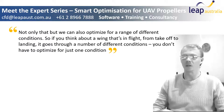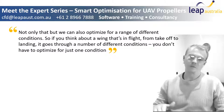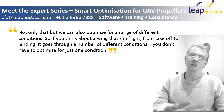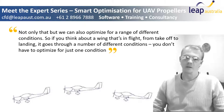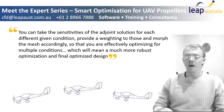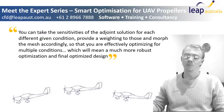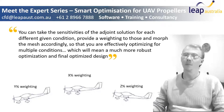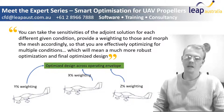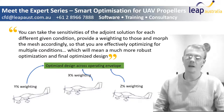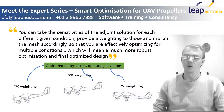Not only that, but we can also optimize for a range of different conditions. If you think about a wing in flight from takeoff to landing, it goes through a number of different conditions. You don't have to optimize for just one — you can take the sensitivities of the adjoint solution for each condition, provide a weight into those, and morph the mesh accordingly, effectively optimizing for multiple conditions, which results in a much more robust final optimized design.